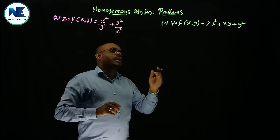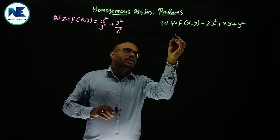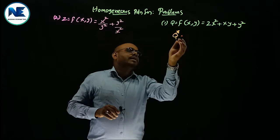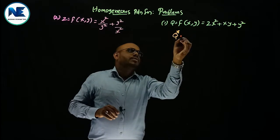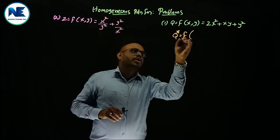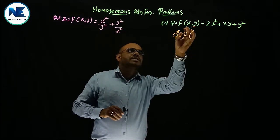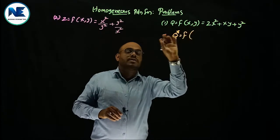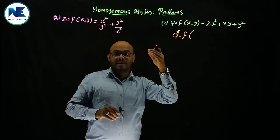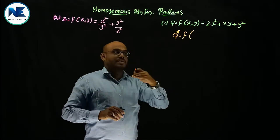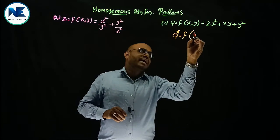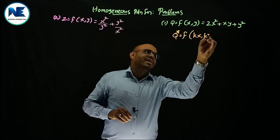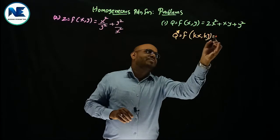Now, the new level of output q* is obtained by multiplying the inputs x and y by the constant k — that is, lambda k — giving us a new function in terms of kx and ky.